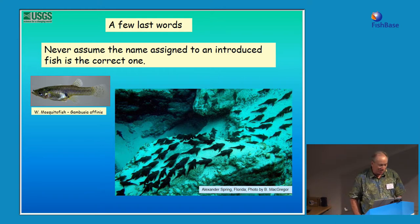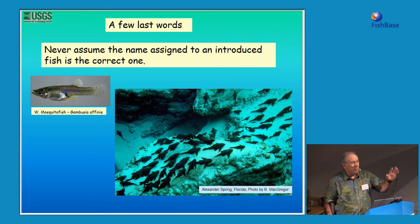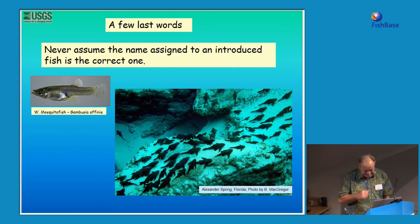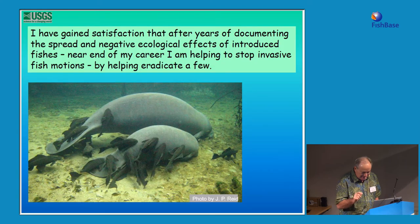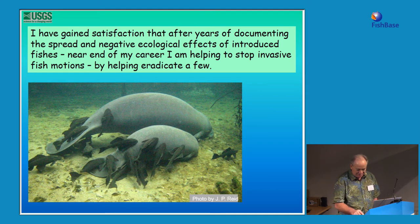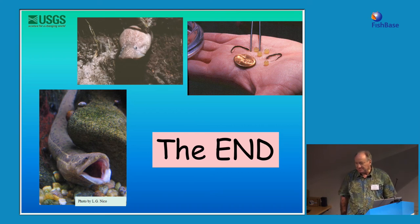I'll end with a few last words. I've learned to never assume the name assigned to an introduced fish is the correct one. I recall once, some 20 years ago, sending Sven Kulander a cichlid fish collected in Florida, and he responded by jokingly saying it was an undescribed fish and naming it Cichlasoma floridensee. I've gained satisfaction after years of documenting the spread and negative ecological effects of introduced fishes that near the end of my career I'm helping to stop invasive fish motions by helping to eradicate at least a few. Thank you.